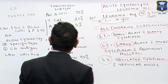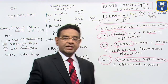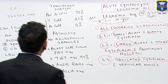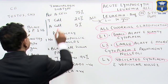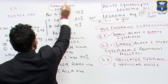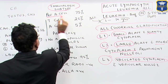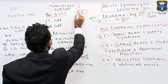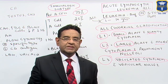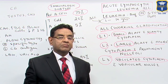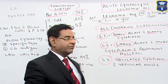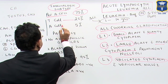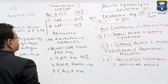Now we talk about the immunological classification or subtype. As per immunological classification, we have pre-B cell, which is 75 percent — that means pre-B cell is the most common subtype. T cell accounts for 20 percent, and B cell accounts for 5 percent.